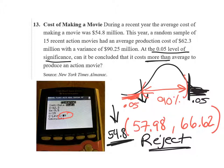Therefore, we can conclude that it does cost more than average to produce an action movie right now.